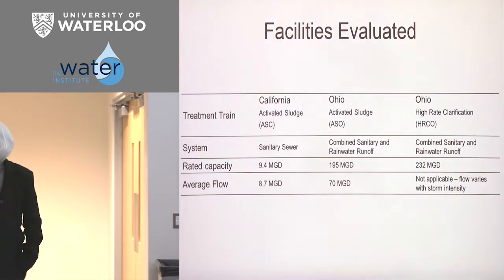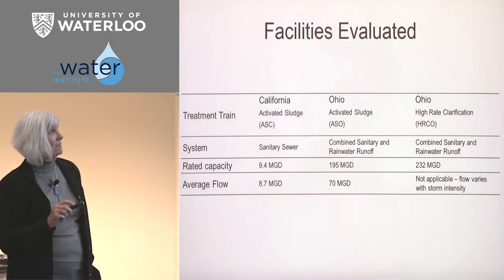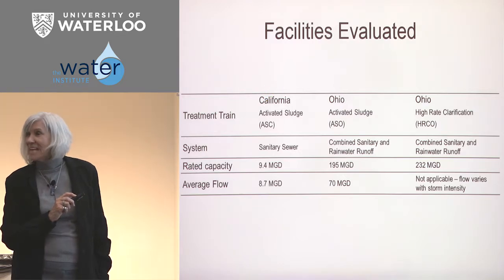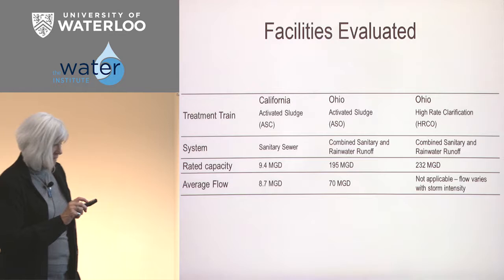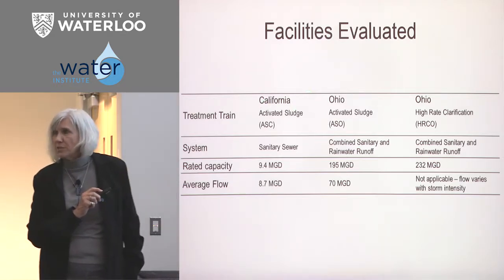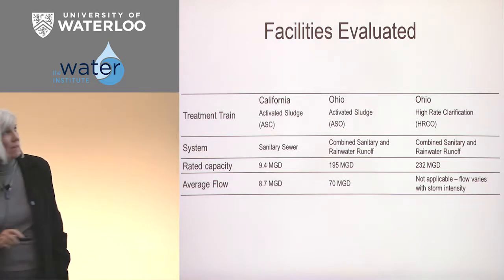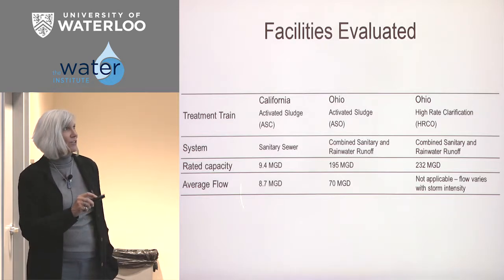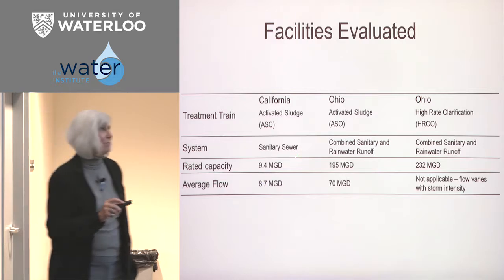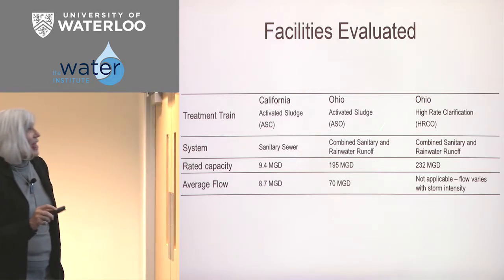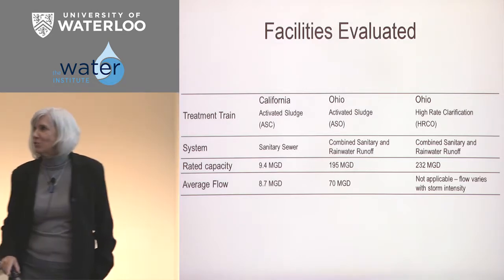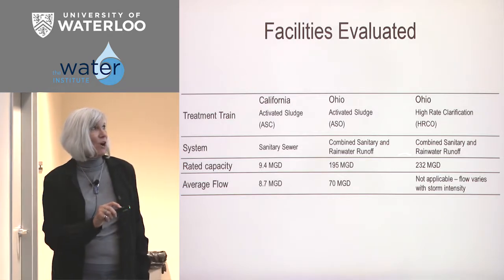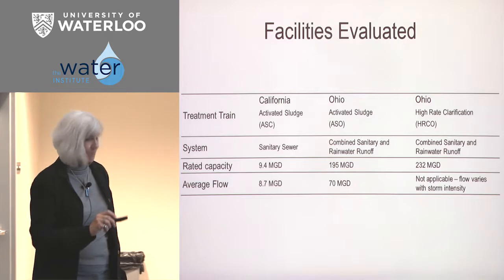Case study one: a California system — a routine activated sludge system, one side old and one side newer — that's thinking of going to potable reuse and must meet the 12-10-10 requirement. Case study two: an Ohio system that is a combined wastewater/stormwater system where flows change dramatically. They built innovative technology called high-rate clarification that both trains run when it rains. The California system is a small one in million gallons per day, while Ohio is a very large wastewater plant that serves a lot of people with flows that go up significantly when it rains.